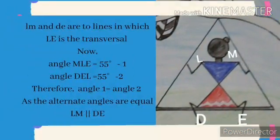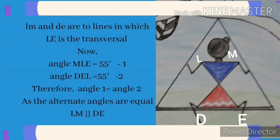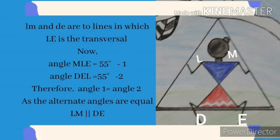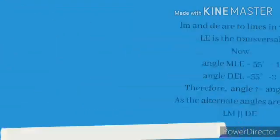LM and DE are two lines in which LE is the transversal. Angle 1, which is angle MLE, is 55 degrees, and angle 2, which is angle DEL, is 55 degrees. Therefore, angle 1 is equal to angle 2. As the alternate angles are equal, LM is parallel to DE.